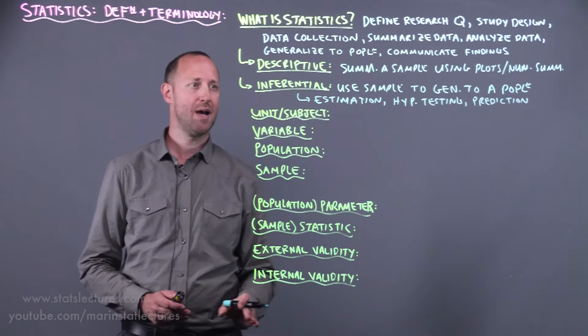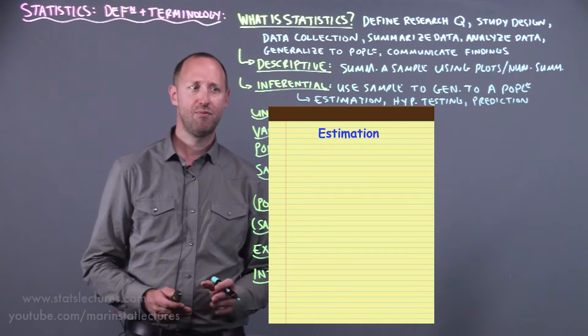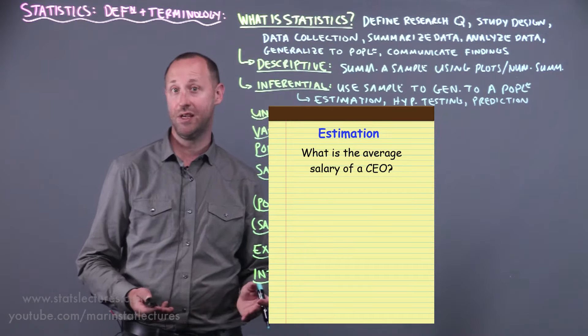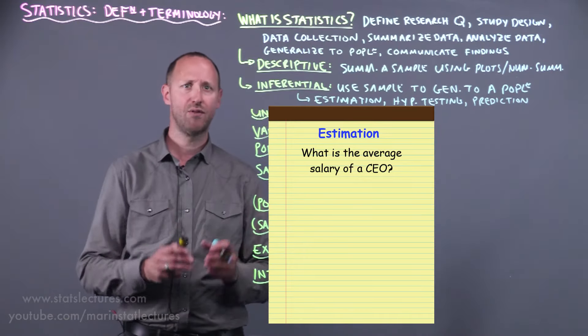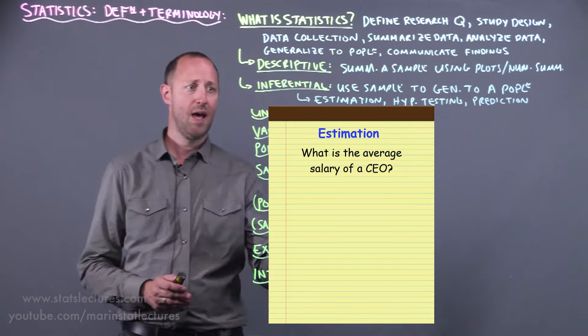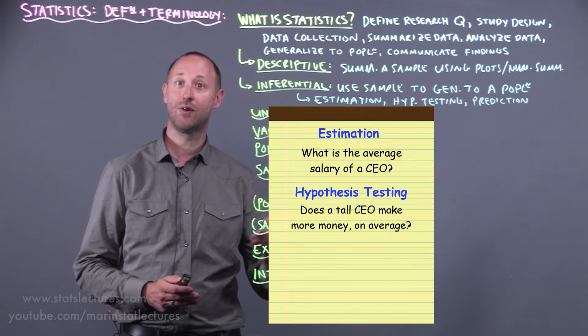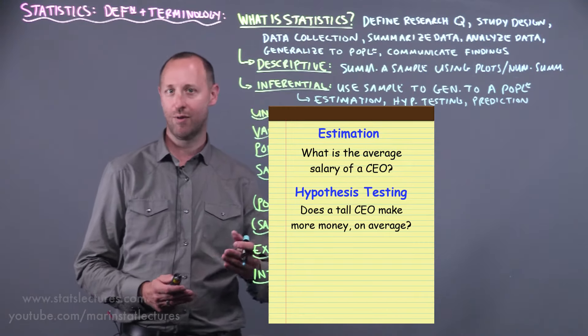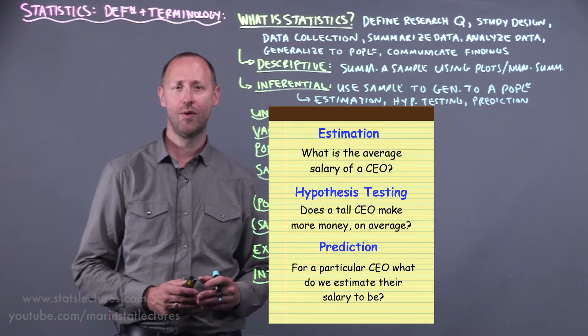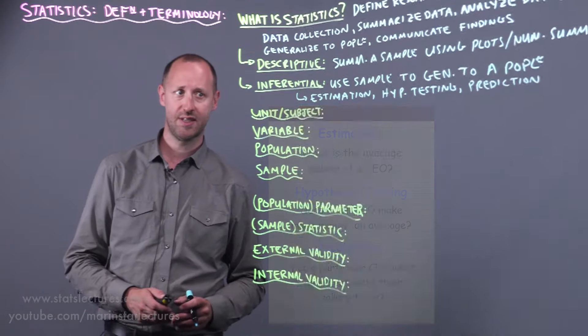So just to take a simple example of what I mean by estimation, hypothesis testing, and prediction. Estimation we might want to think of what is the average or mean salary of a CEO, and we may want to put an interval around that. Hypothesis testing might involve questions like does a CEO who's six feet or taller earn more on average than one who's not. Prediction might be for a particular CEO what does our model estimate their salary would be. These are all different forms of inferential statistics.